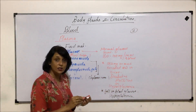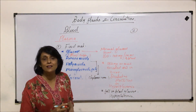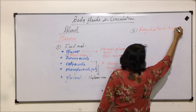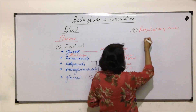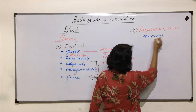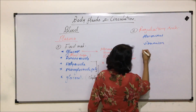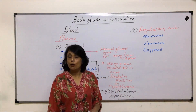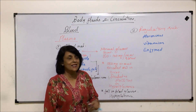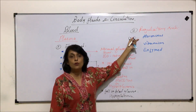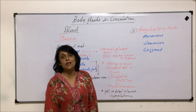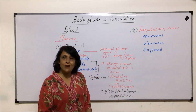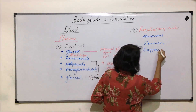Other substances present in blood are regulatory substances, which can be hormones, vitamins, or enzymes. Hormones are secreted by endocrine glands, which are ductless glands that pour their secretions directly into the blood, and it is the plasma that transports these hormones. Vitamins after absorption are also transported by plasma, and some enzymes are also present in the blood.